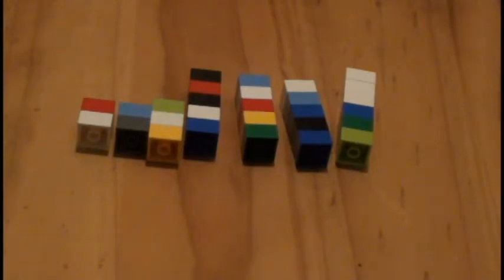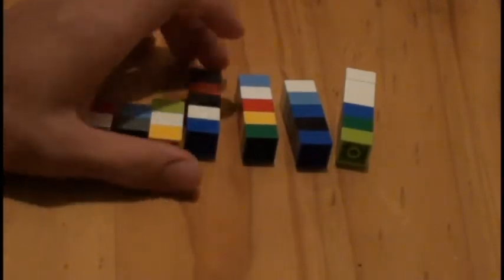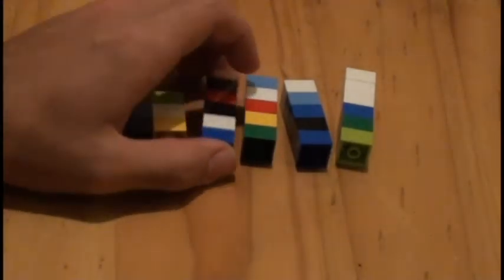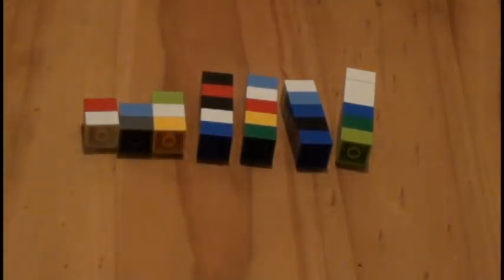So now we're going to use my original seven sets of Legos here to find the median. Notice I have the Legos in order because we can't find the median if they are not in order. As you can see here, the middle stack is five Legos, so therefore the median is going to be five in this situation.